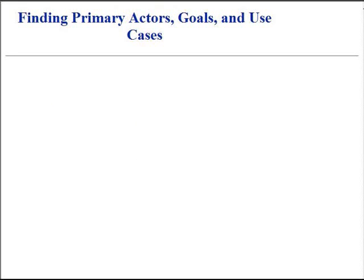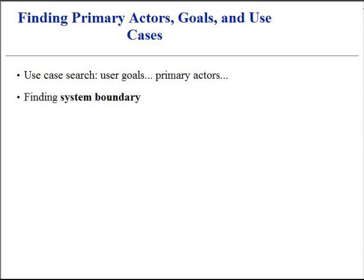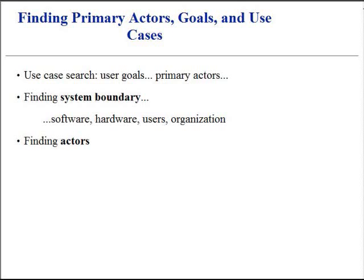Use cases are defined to satisfy user goals of the primary user actors. The basic procedure is to choose the system boundary. Is it just the software application? Is it the hardware and application as a unit? Is it both plus persons using the application? Or is it an entire organization? Often, to find actors, we need to identify those who have user goals, or those who have already fulfilled the goals through using the system services.